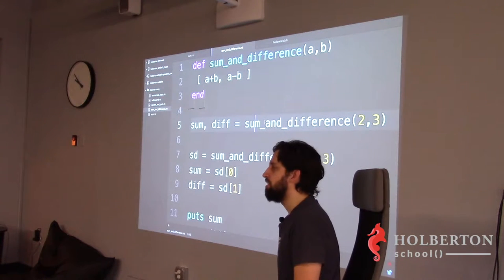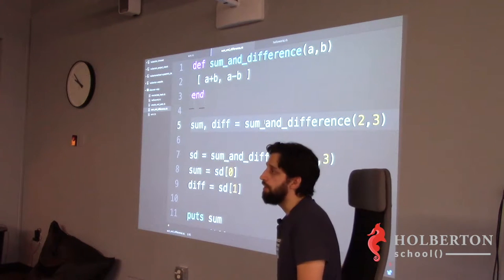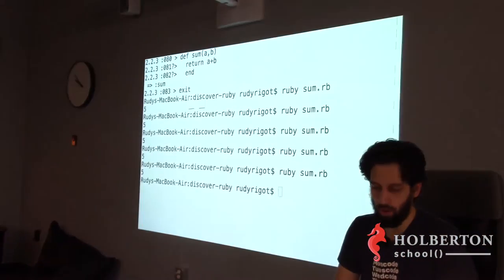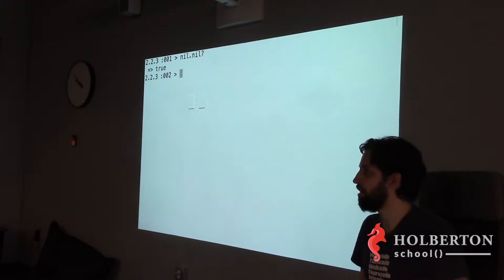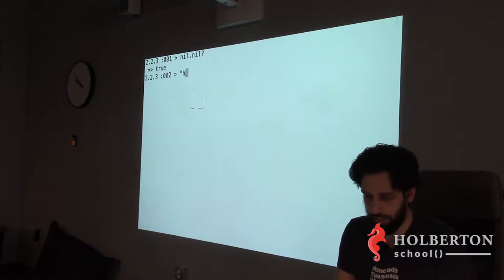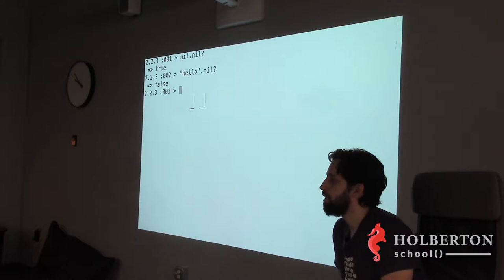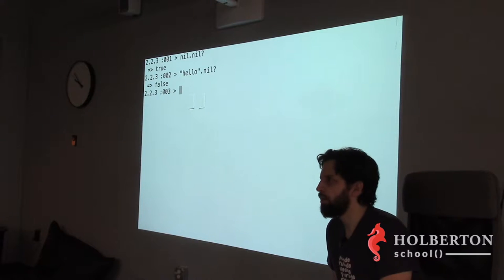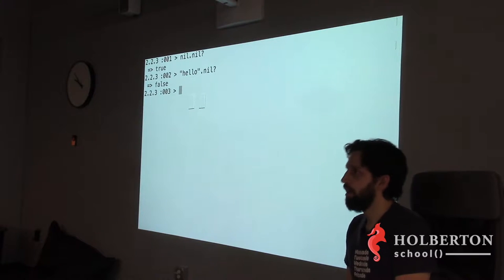You said everything is an object and Ruby is unique in that way. In JavaScript, numbers and nil are NOT objects. In Ruby, nil IS an object — you can call `nil.nil?` and it returns true, and `'hello'.nil?` returns false. It's a function on the object that tells you whether something is nil or not. Ruby is the only popular language I know where this is the case.